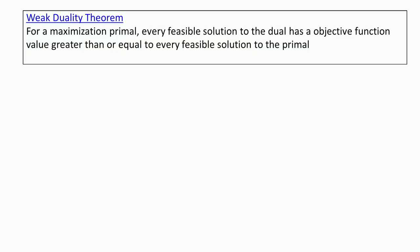We first start with a result called the weak duality theorem. For a maximization primal, every feasible solution to the dual has an objective function value greater than or equal to that of every feasible solution to the primal. We are assuming that the primal is a maximization problem.